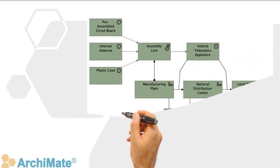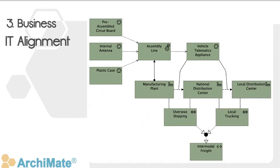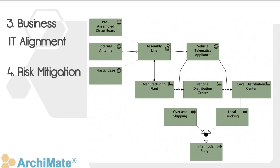Business-IT alignment: using the ArchiMate specification enables better alignment between business goals, processes, and IT systems, which is crucial for driving successful digital transformations and optimizing IT investments.